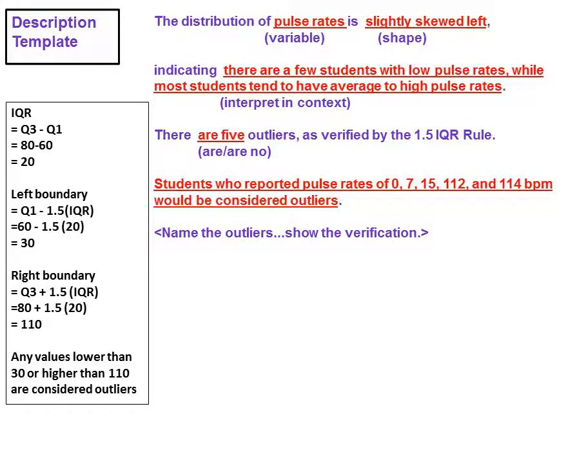Let's take a moment here and look at how we actually were able to calculate those outliers. The IQR is the difference between Q3 and Q1. It's like a mid-range. 80 minus 60 is 20. For the left boundary, we take that difference, multiply by 1.5, and subtract it from Q1. So 60 minus 1.5 times 20 gives us 30.